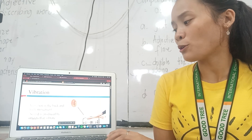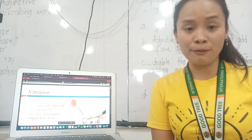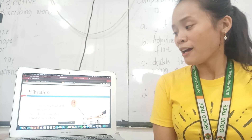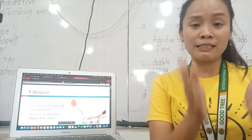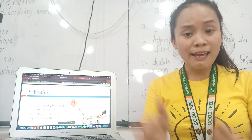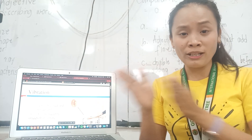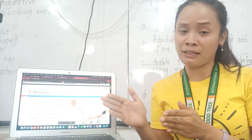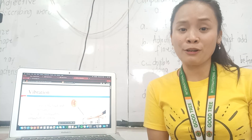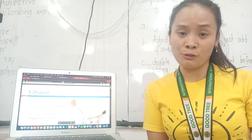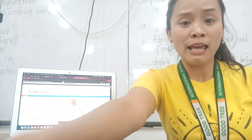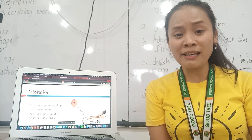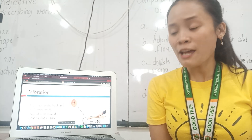Sound is produced by objects that vibrate. So what is vibration? Vibration is the back and forth movement. When something goes back and forth, that means vibration is being produced. So whenever you hit a table and you hear a sound, that means there is vibration.